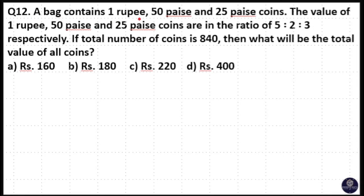A bag contains 1 rupee, 50 paisa, and 25 paisa coins. The value of 1 rupee, 50 paisa, and 25 paisa coins are in the ratio 5 to 2 to 3. If the total number of coins is 840, what will be the total value of all coins?